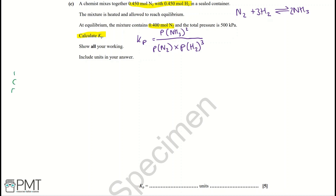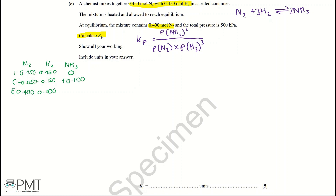Using an ICE calculation for N₂, H₂, and NH₃: initial moles are 0.450 for N₂ and H₂, and 0 for NH₃. Since N₂ at equilibrium is 0.400, the change is −0.050. By stoichiometry, H₂ changes by −0.150, giving 0.300 moles. NH₃ changes by +0.100, giving 0.100 moles. All values in moles; total moles at equilibrium = 0.800.